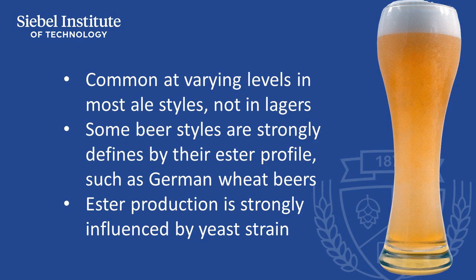For example, products like German wheat beers require a notable level of the ester isoamyl acetate to give the beer its distinctive banana notes, which are dependent on both yeast strain and fermentation profile for their control.